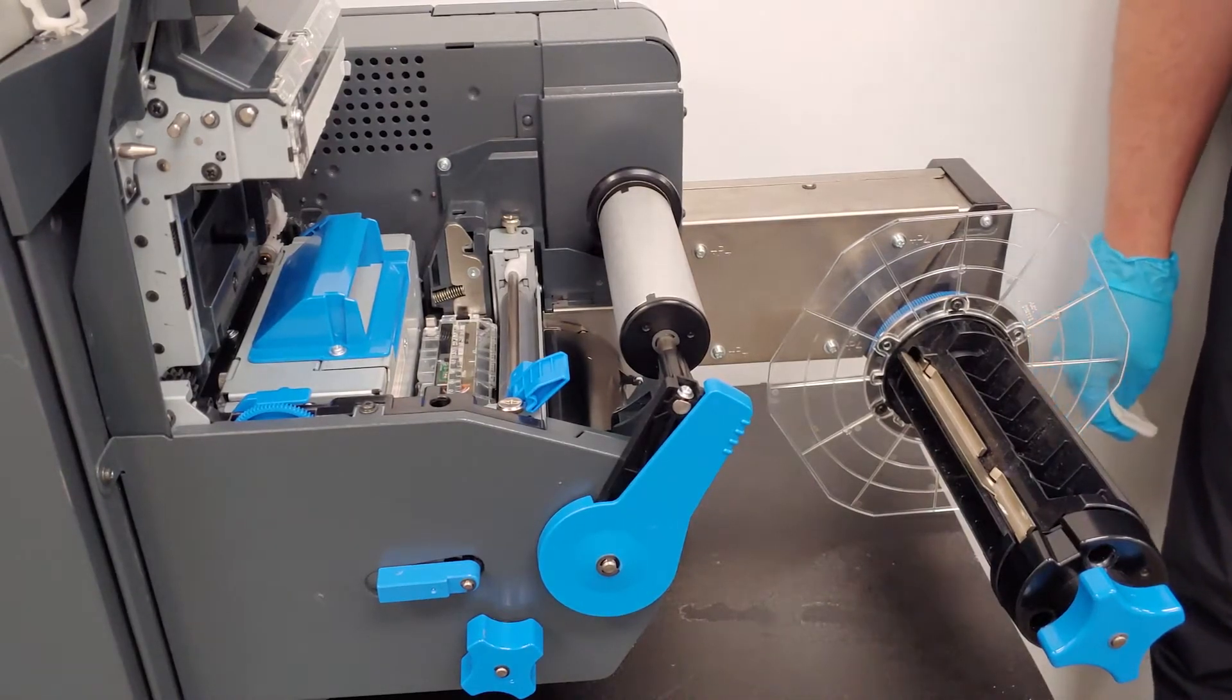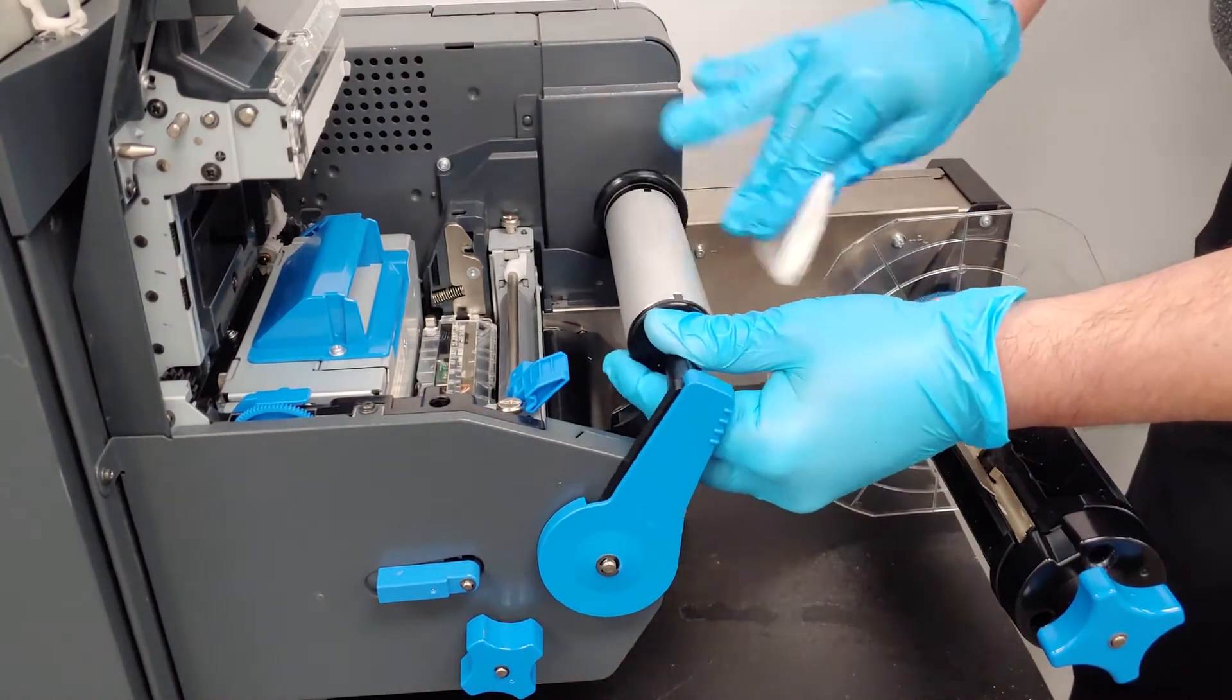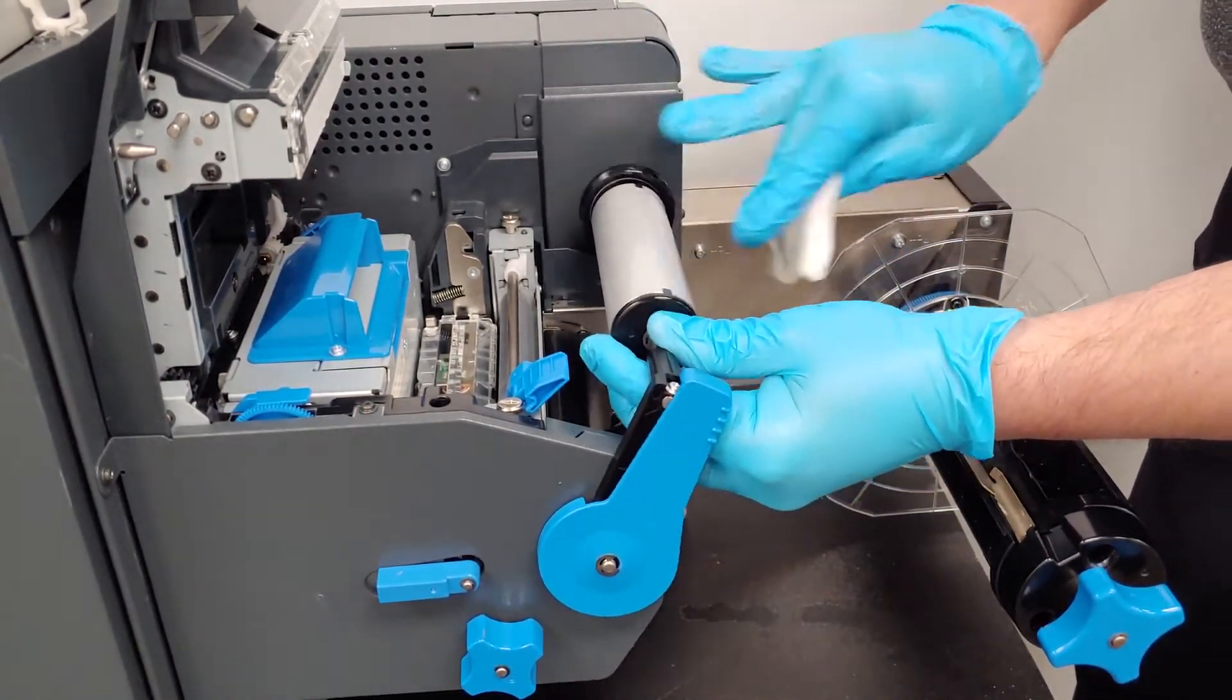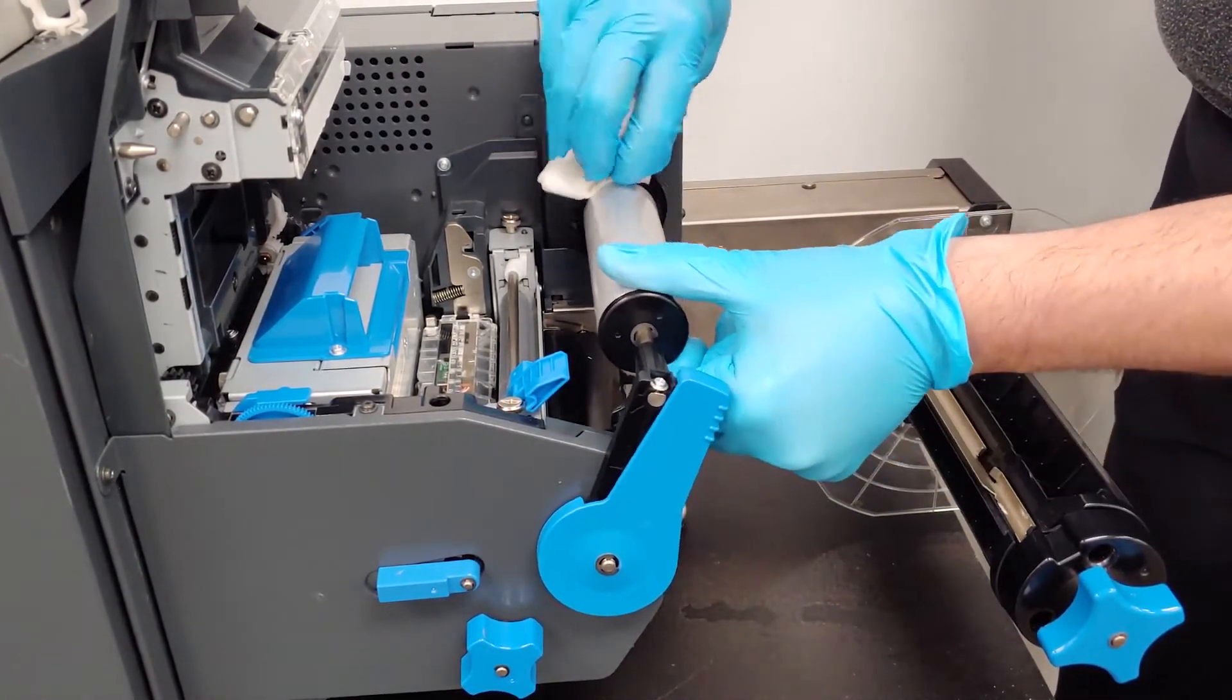Hold the tension roller with one hand while wiping the roller in a side-to-side motion. In a similar manner, rotate the roller while wiping the label guide on the inside edge of the tension roller.